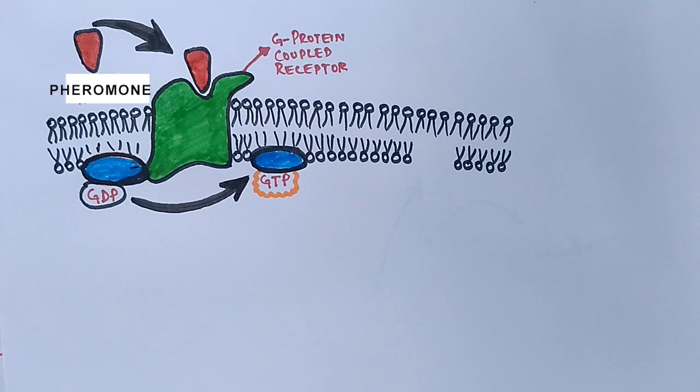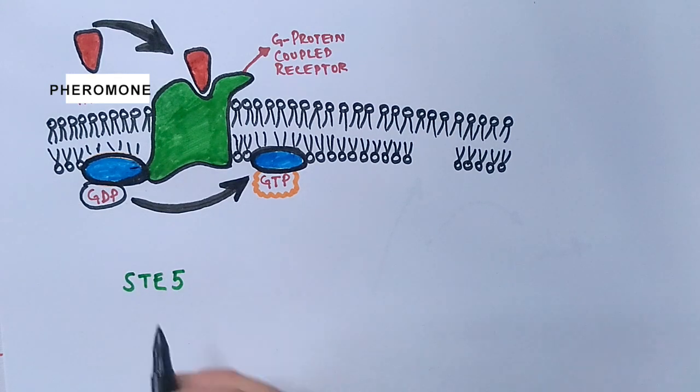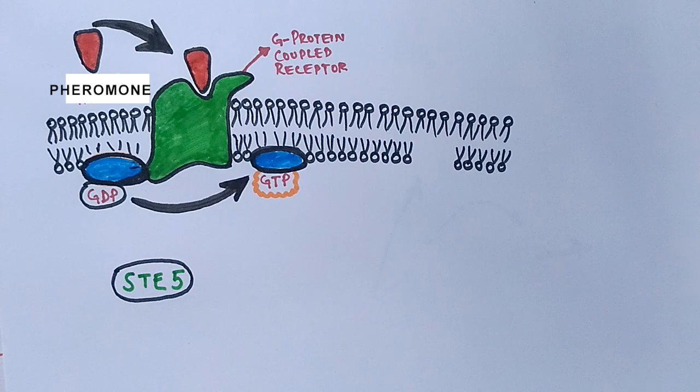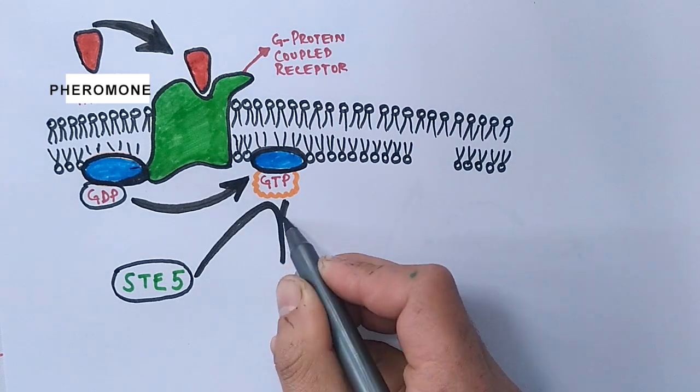The activation of the G protein recruits a ste5 protein in the yeast cell, which is actually a scaffold protein, and after this the phosphorylation cascade kicks in.